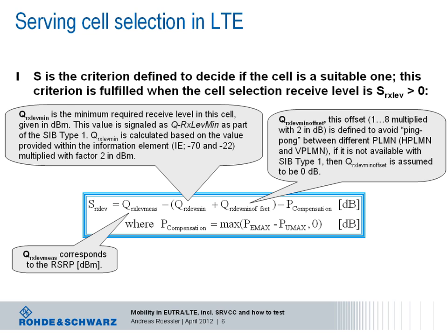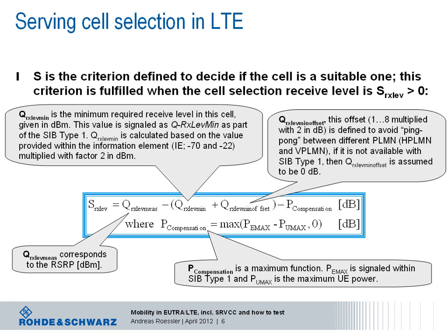The next value is an offset that is only taken into account as a result of periodic search for a higher priority public land mobile network. It is defined to avoid ping-pong effects between different networks in case of roaming. If this value is not transmitted in SIB type 1, it is assumed to be zero. And last but not least, we have P-compensation, computed as a maximum function — whatever parameter is higher: P-Emax subtracted from P-max, or zero.